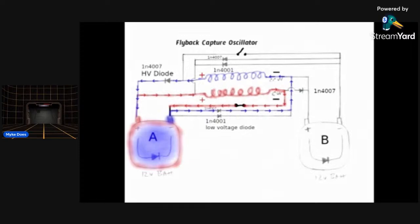Okay, so right here you can see battery A to the left is charging up the coil on the bottom as shown in red.